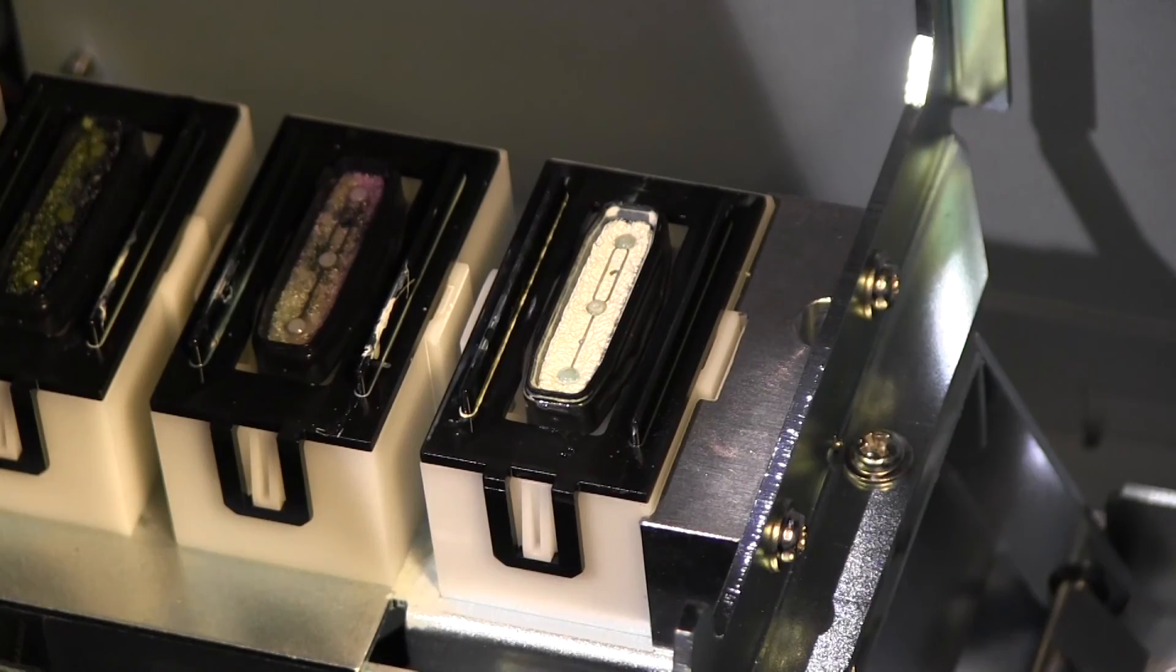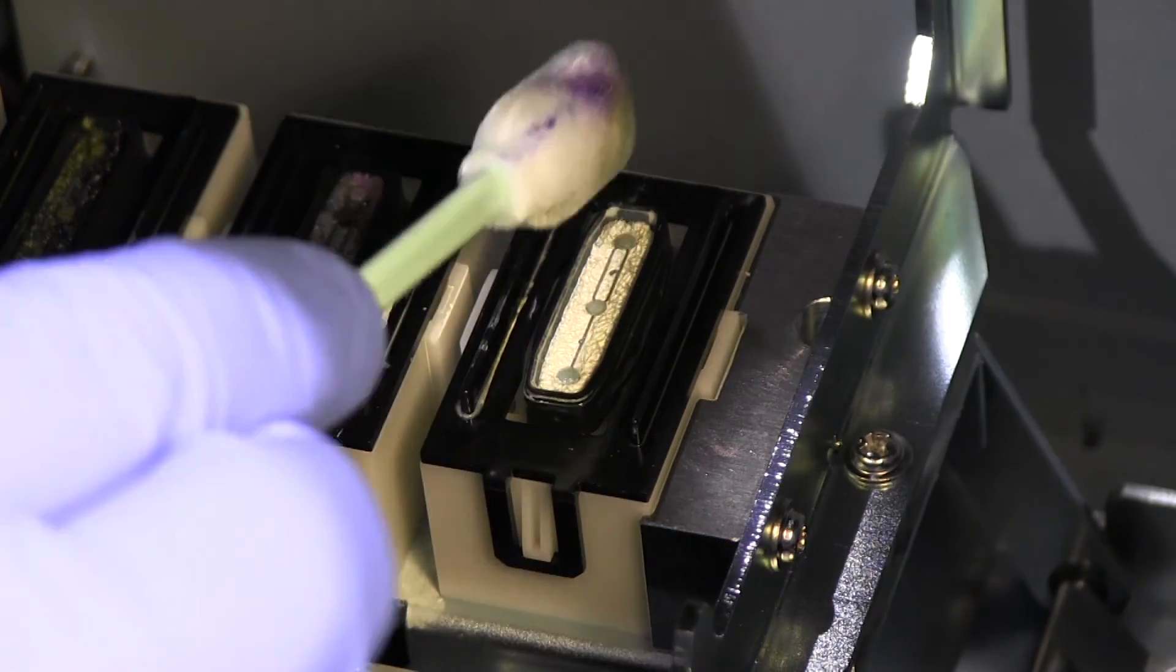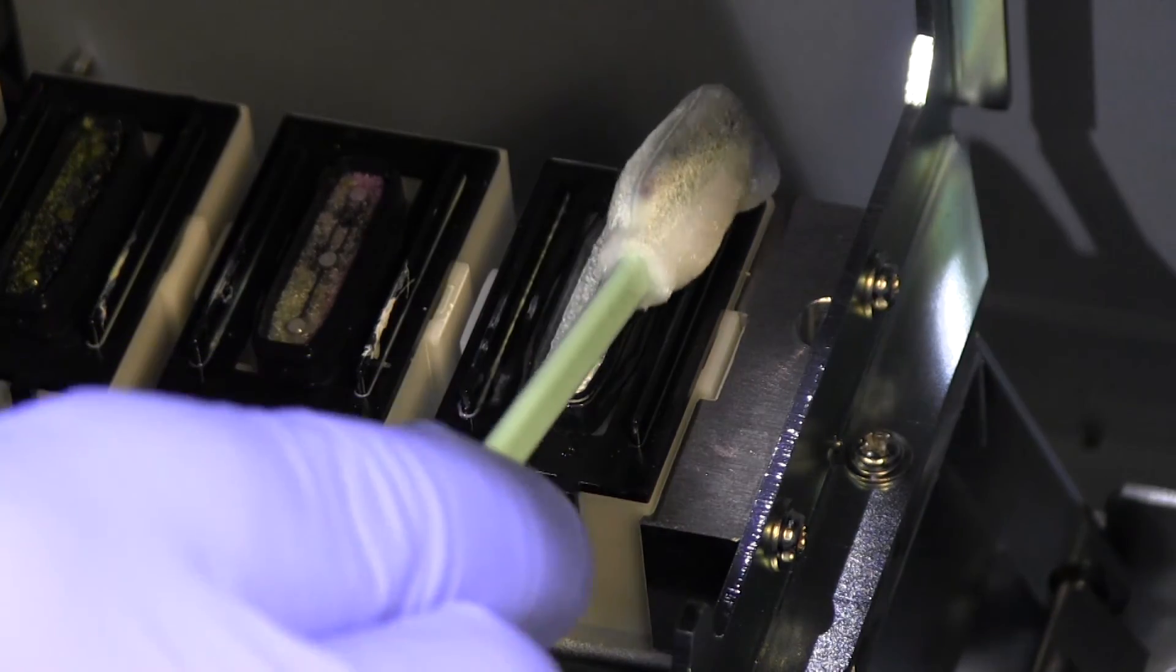There shouldn't be any need to clean the inside of the cap top as this part runs any waste ink into the waste ink bottle and therefore it is normal for it to have ink showing.